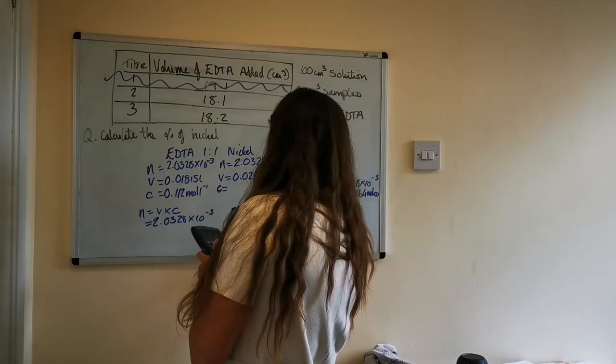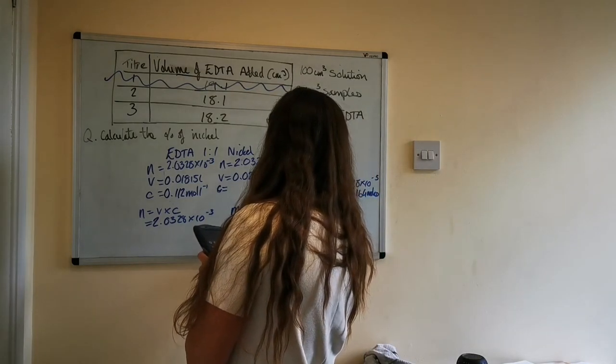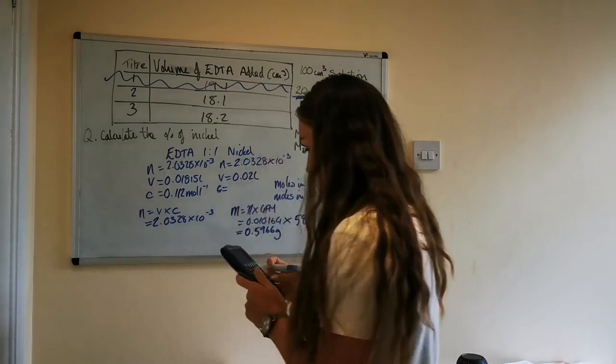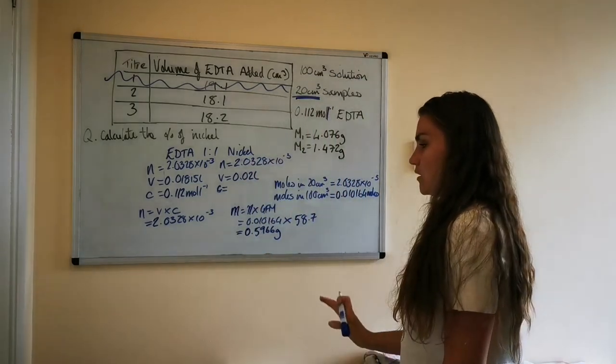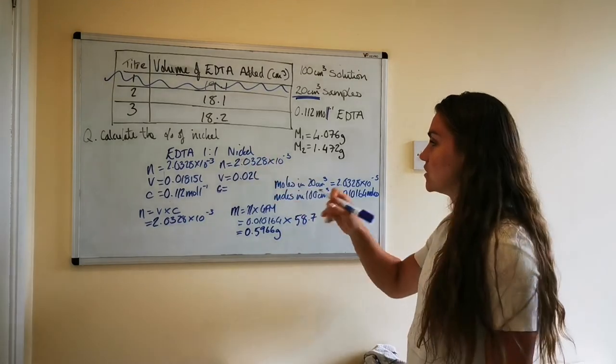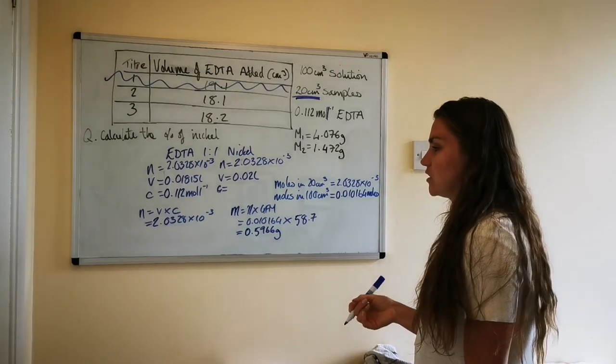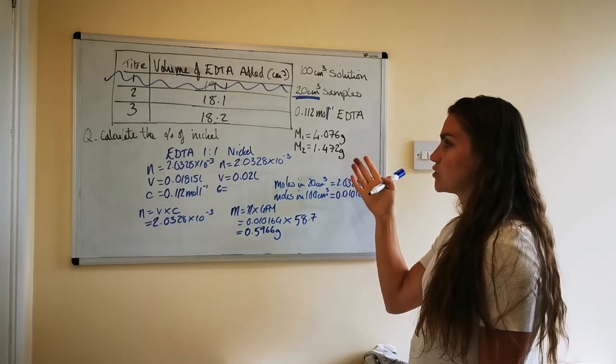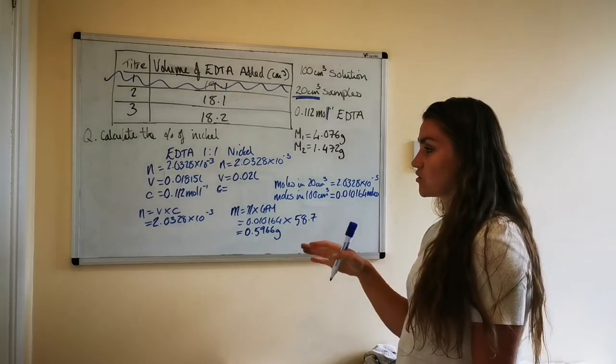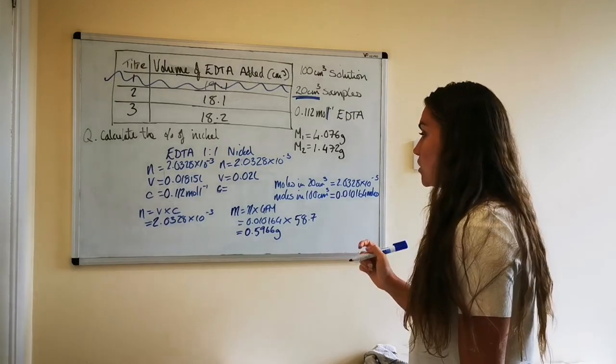Okay so if you put that in your calculator - so that comes out 0.5966 grams. Okay now so that's the mass of nickel that was present, but it's wanting the percentage, so all we have to do is a basic percentage calculation to work out how much of the total mass of the nickel hydrated nickel sulfate was actually just made up of nickel.